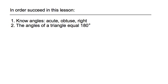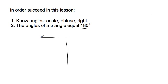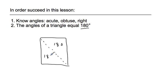In order to succeed in this lesson, you're going to have to know your angles — an acute angle, an obtuse angle, and a right angle. You'll also know that any triangle, if you added up all of their angles, it would equal 180 degrees. That's based on quadrilaterals being 360 degrees, and a triangle being exactly half of that.